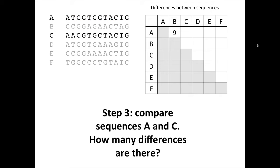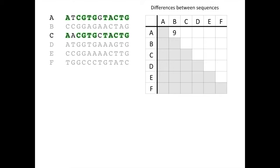The next step is to compare sequences A and C to determine how many differences there are between these two sequences. In this case, we can see that the sequences are much more alike, with ten positions that are the same between the sequences and only two that are different. So our next entry in the table is two differences between A and C. We can continue comparing the sequences in this way until we have completed the rest of the table.